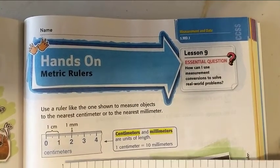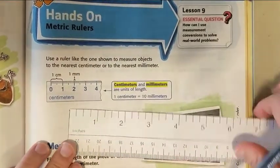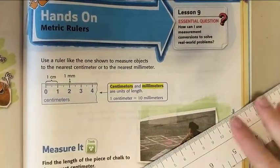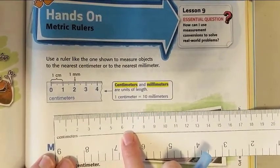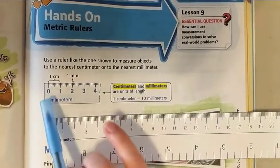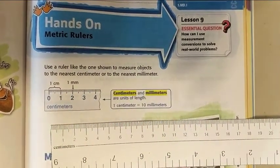Now we're going to work with the other side of the ruler. We've been working with customary units of inches, but we're going to turn the ruler over and use centimeters and millimeters, the metric system. Use a ruler like the one shown to measure objects to the nearest centimeter or nearest millimeter.